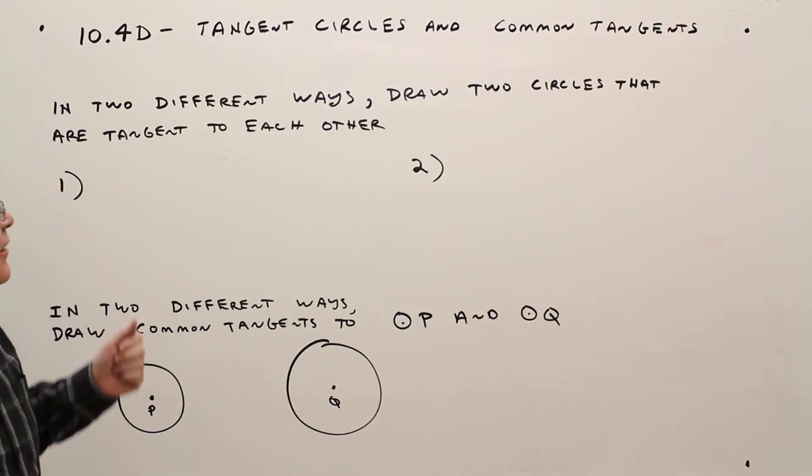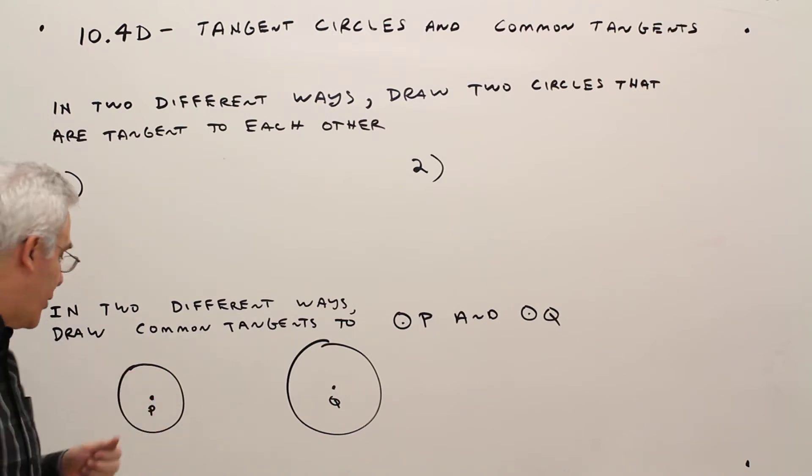Alright, first part. In two different ways, draw two circles that are tangent to each other.